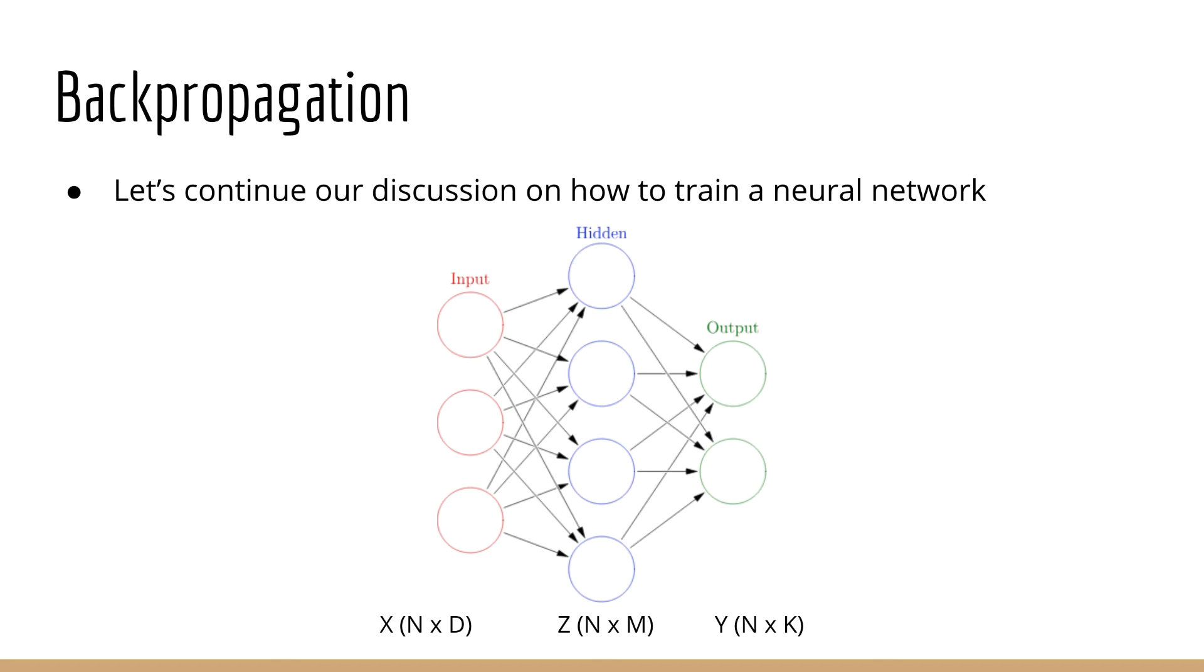To start, let's review what the central objects we have to consider are. First, we have our inputs x, which are of shape n by d. We then pass these through the first layer of our neural network, which gives us the hidden layer values z. This has the shape n by m. Finally, we pass z through the output layer of our neural network, and that gives us y. y has the shape n by k.